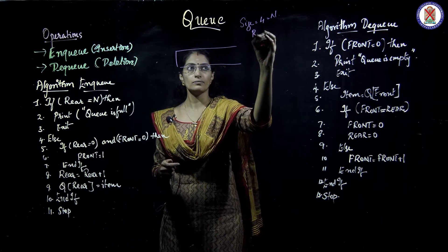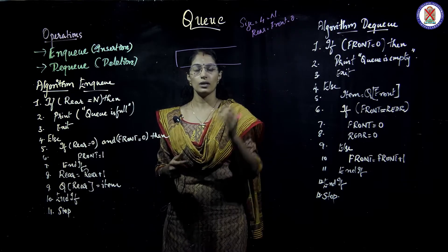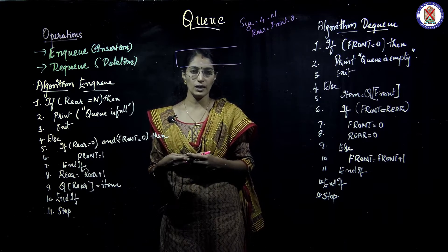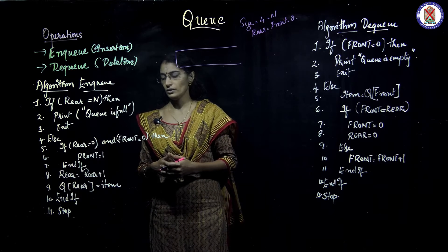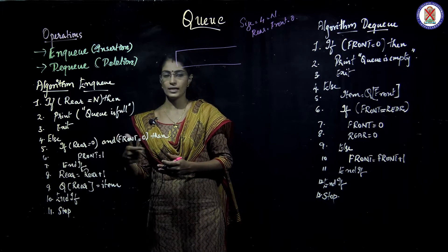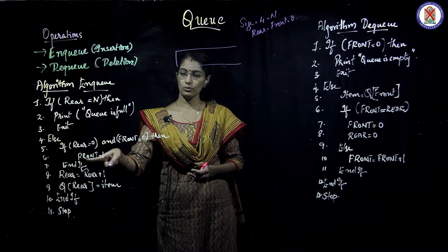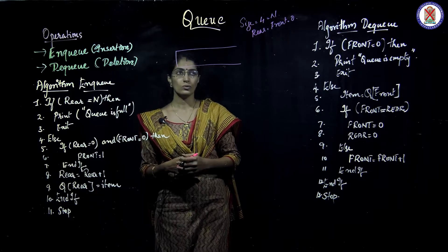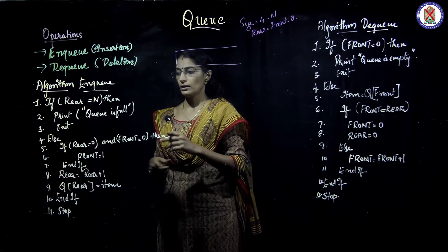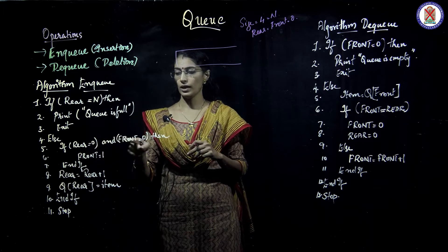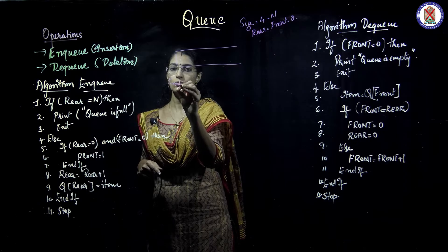Presently, rear and front are both 0 because the queue is empty. We are going to insert into a new queue. So the 'if' portion (rear == N) is not valid now. We go to the else portion. If rear is equal to 0 and front is equal to 0, then we set front equal to 1. This condition is applicable here because when we begin with a new queue, rear is 0 and front is 0.